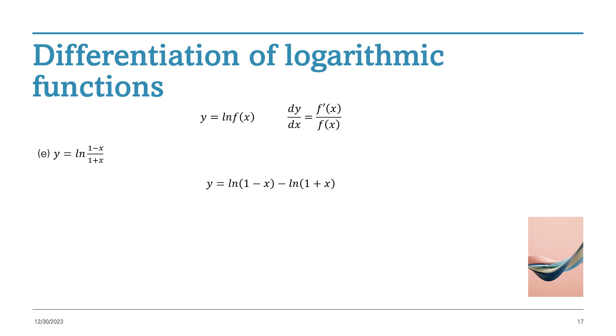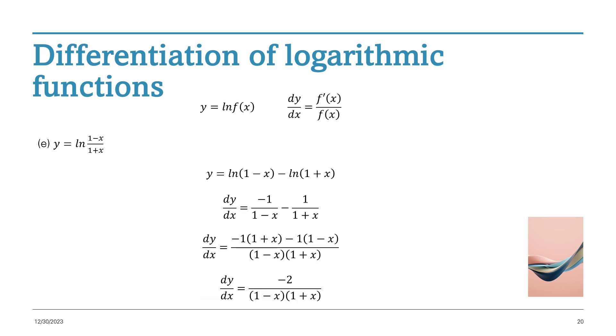So ln of 1 minus x, its function is 1 minus x. And ln of 1 plus x, its function is 1 plus x. So that gives us, for the first one, 1 minus x on the bottom and minus 1 on the top. And for the second one, 1 plus x on the bottom and 1 on the top. Putting them as a common denominator, that's what we actually get. And simplifying that, we get minus 2 over 1 minus x times 1 plus x.